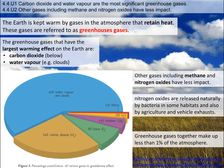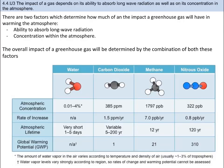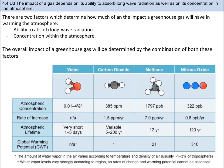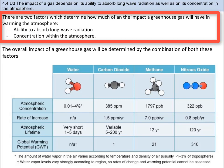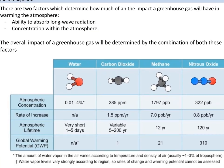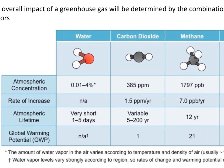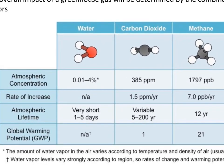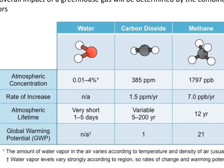Don't confuse ozone depletion here, as it is not the cause of the enhanced greenhouse effect. There are two factors that determine the warming impact of a greenhouse gas: the ability to absorb long-wave radiation and their abundance in the atmosphere. Two variables that determine the concentration of gas in the atmosphere are the atmospheric lifetime — how long does it exist — and the rate of increase.